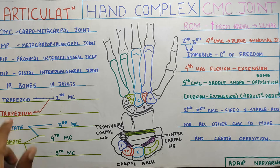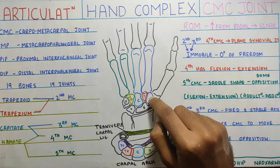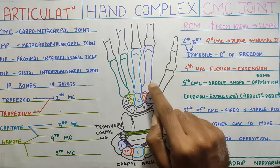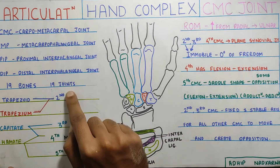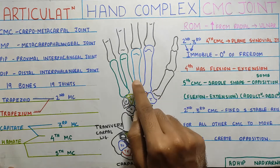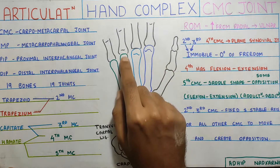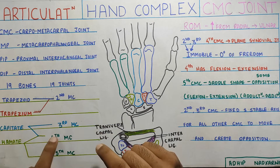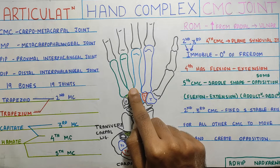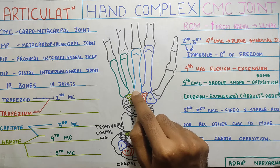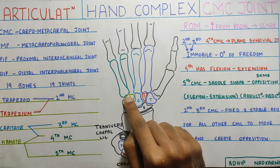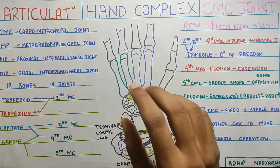Starting with articulation: the trapezoid, the blue colour bone, articulates with the 2nd metacarpal. The trapezium also articulates with the 2nd metacarpal — so the 2nd metacarpal articulates with two carpals, the trapezoid and trapezium, the two T's. Then the 3rd metacarpal articulates with the capitate. The 4th metacarpal articulates with two — the hamate and capitate. And finally the 5th metacarpal, the green one, articulates with the hamate only. That is how articulation happens in the carpo-metacarpal joint.